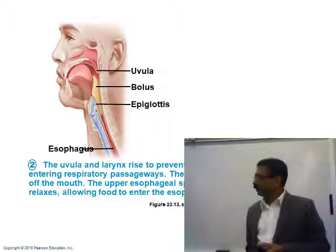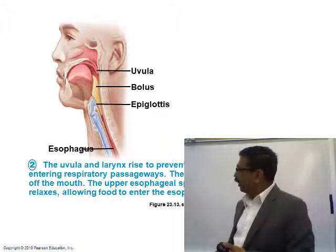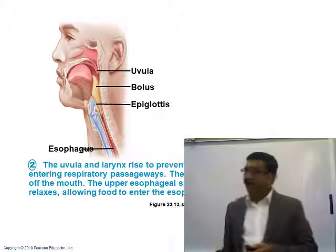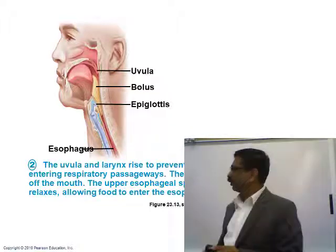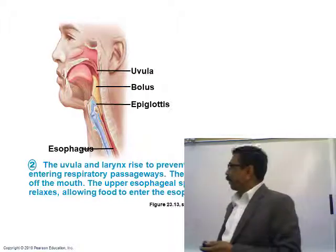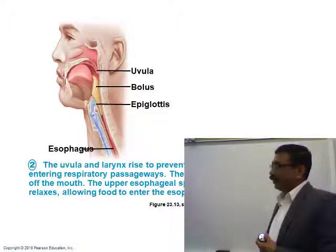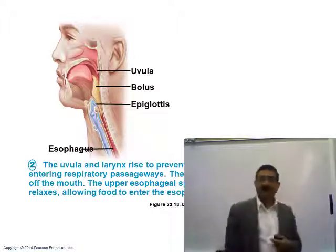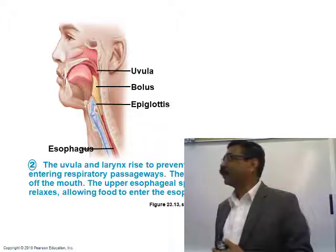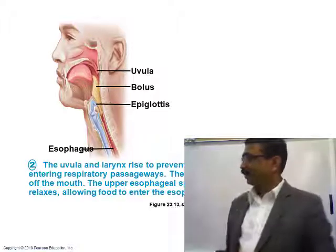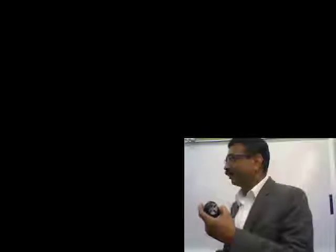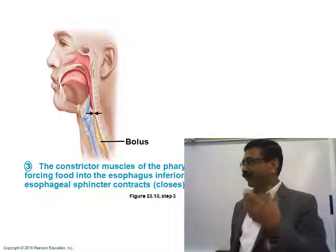When you swallow, the uvula moves up, and the upper esophageal sphincter gets opened to let the food bolus enter into the esophagus. Once the food bolus is entirely inside the esophagus, the upper esophageal sphincter closes again so food cannot go back up — it will go down.